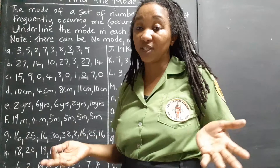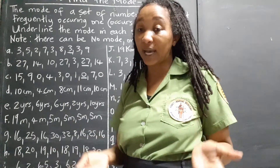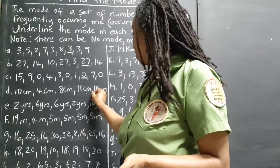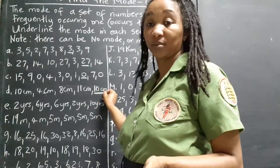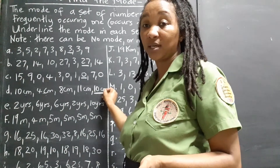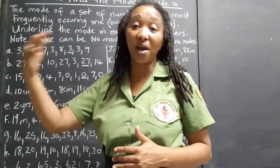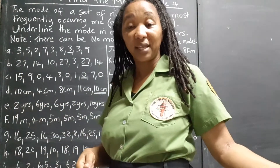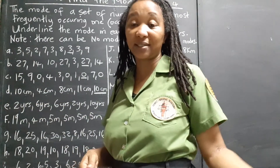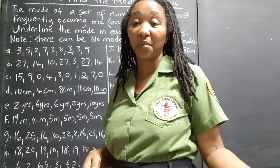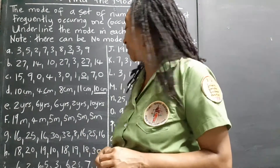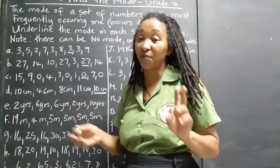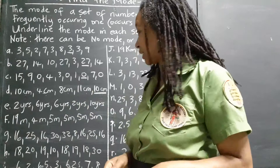Even though the 10 is listed just twice, it is still the mode. You just need to be one more occurrence than the next best competitor and you are the champion. So 10 centimeters is the mode — the champion — even though there are only two tens.